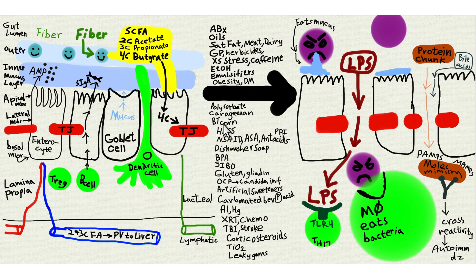BT corn — non-organic GMO corn — is associated with leaky gut. The BT toxin comes from a bacteria and irritates the intestines in insects, and it can irritate our gut as well. High fructose corn syrup is associated with increased risk of leaky gut. HG — advanced glycation end-products — are also associated with increased leaky gut and are sometimes elevated in high fructose corn syrup products.